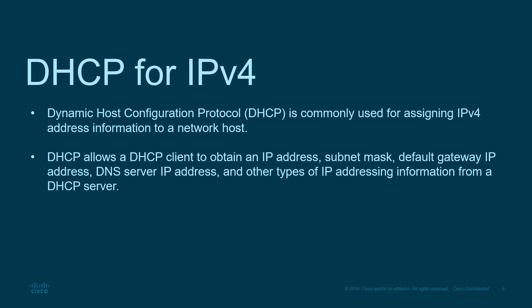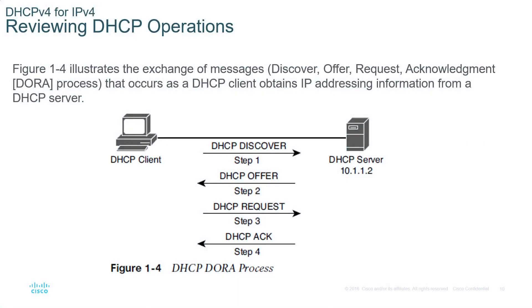If we're not using static IP addressing — which should only be used for fixed services such as servers and printers that need to be at a fixed location in the addressing — all other host machines should be automatically assigned. To do this we use DHCP. We'll look at the IPv4 version first. Let's go through the DORA process: Discover, Offer, Request, Acknowledgement.